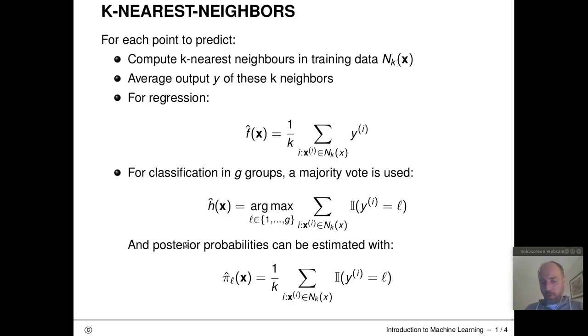And we can also construct posterior probabilities in a similar manner. So if we want to talk about what is the posterior probability of object x being from class l, we just peek into the set of k-nearest-neighbors and we compute the frequency, the percentage number of nearest neighbors having class label l.